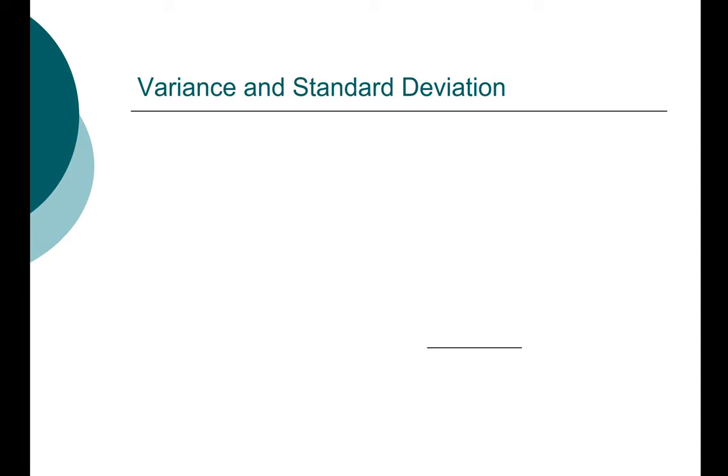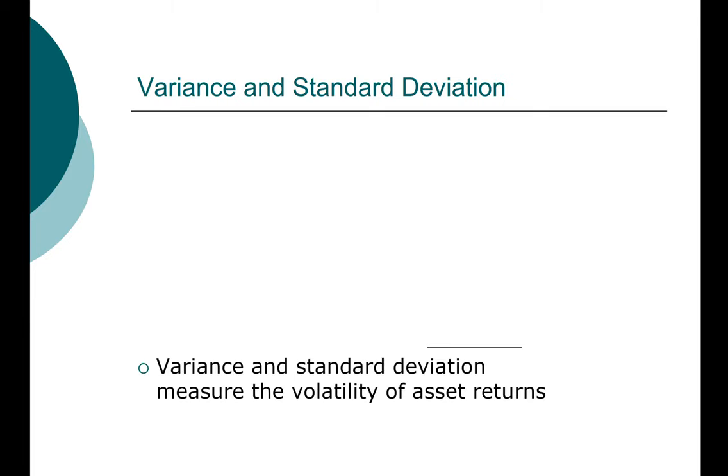The two measures of risk we're going to first look at are called variance and standard deviation. These are both statistical terms. Both variance and standard deviation measure the volatility of the year-to-year or day-to-day return of various financial securities. So the greater the volatility, meaning the greater the variance or the greater the standard deviation, the greater is the risk associated with that particular asset.